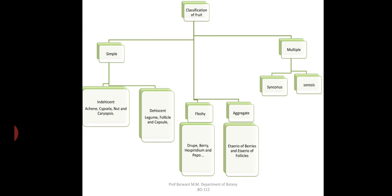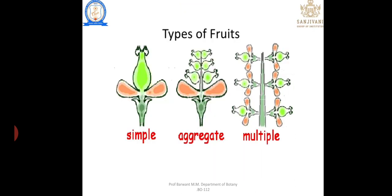The simple type is classified into dry fruit and fleshy fruit. Dry fruit is classified into indehiscent and dehiscent. Fleshy fruit is classified into four types. Aggregate fruit consists of unitary ovaries and follicles. Multiple fruit includes sorosis and syconus. Generally we see three types — simple, aggregate, and multiple — but most classifications give four types.